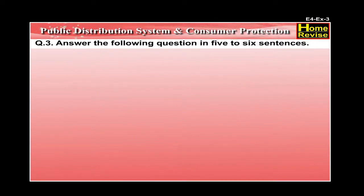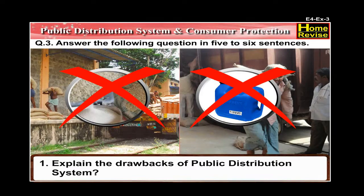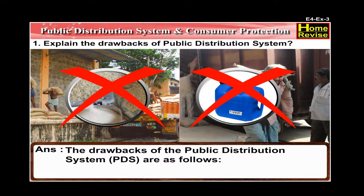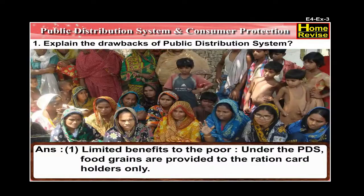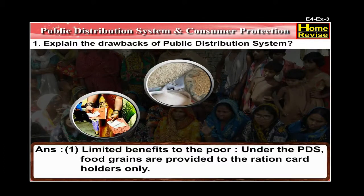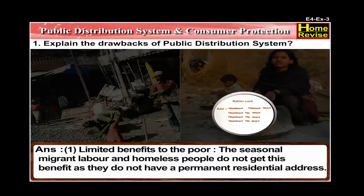Question Number 3: Answer the following questions in 5 to 6 sentences. Number 1: Explain the drawbacks of the public distribution system. The drawbacks of the PDS are as follows. Number 1: Limited benefits to the poor — under the PDS, food grains are provided to ration card holders only; seasonal migrant labour and homeless people do not get this benefit as they do not have a permanent residential address.